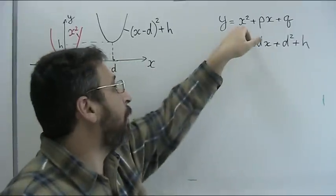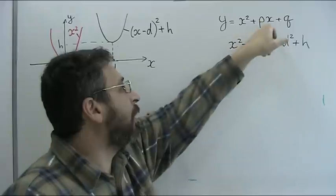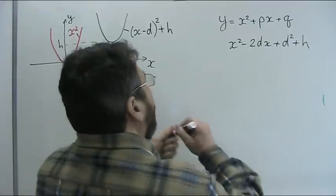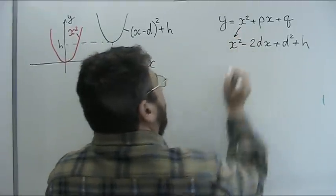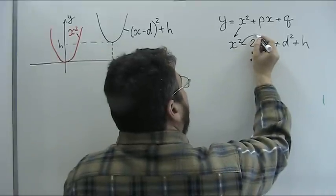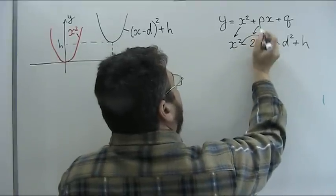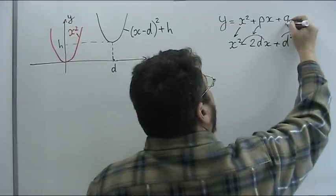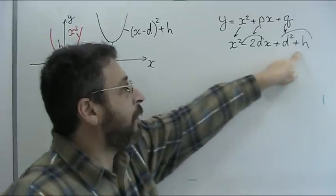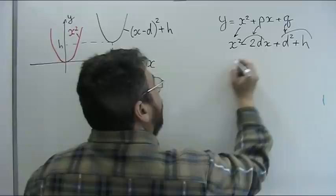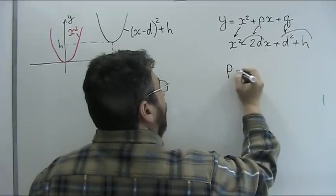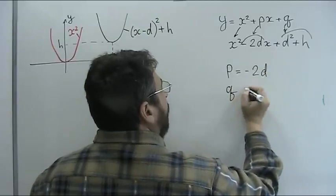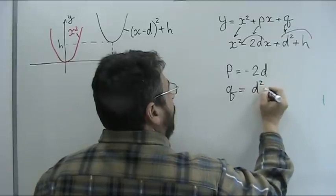And in order those two quadratic functions be equal, coefficients before quadratic term, linear term and constant term should be the same. So before quadratic term we have the same coefficient. Before linear term we need p to be equal to -2d and constant term is like here. Let's write it down.